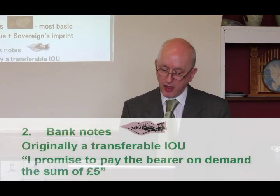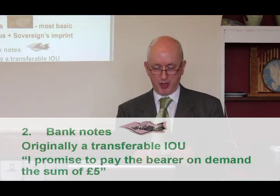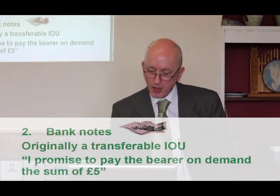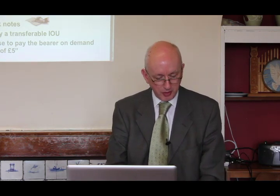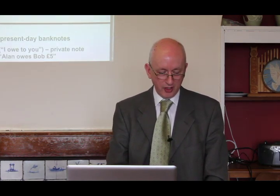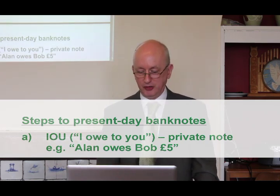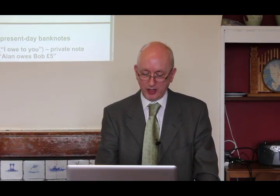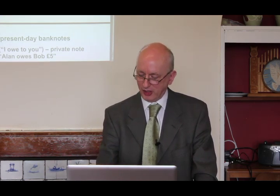Secondly, banknotes — they were originally a transferable IOU, and in fact it still says on it: 'I promise to pay the bearer on demand the sum of five pounds,' signed by the chief cashier of the Bank of England. IOU is just a shorthand for 'I owe something to you.' So if Alan borrows five pounds from Bob, he might write on a piece of paper 'Alan owes Bob five pounds,' give it to him, sign and date it — a private arrangement between them. When he eventually repays the money they might destroy the piece of paper, or Bob might sign it to say he's received it.